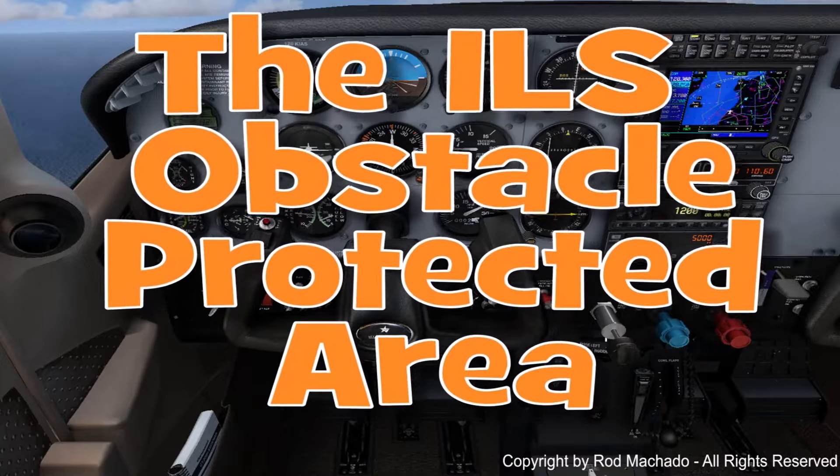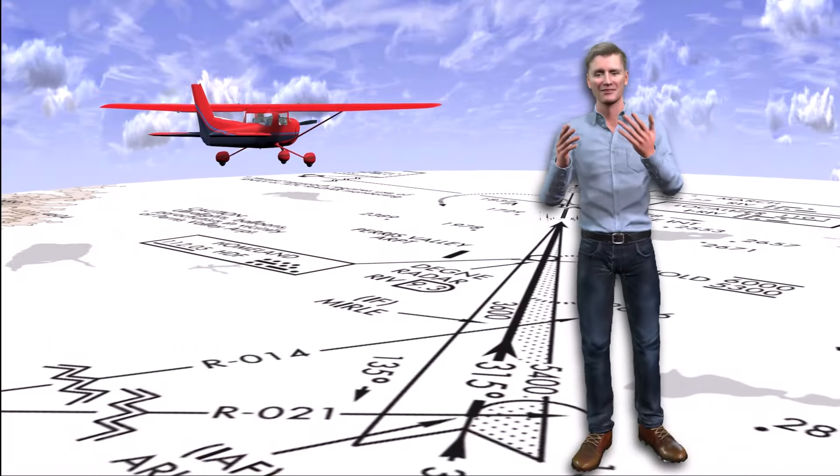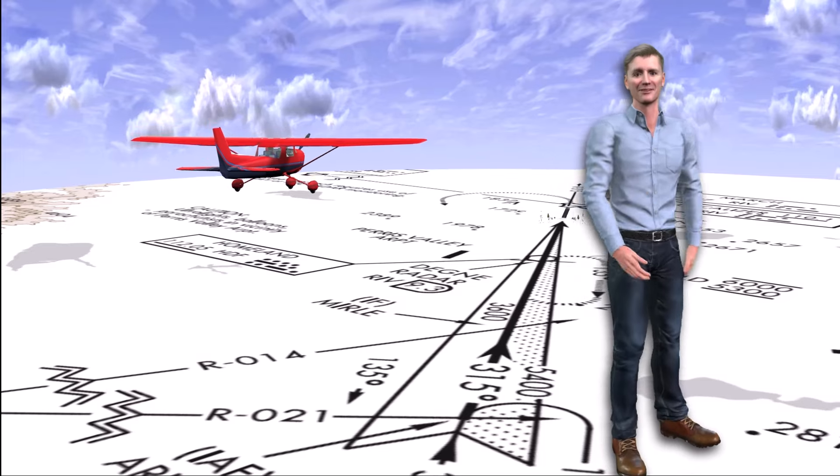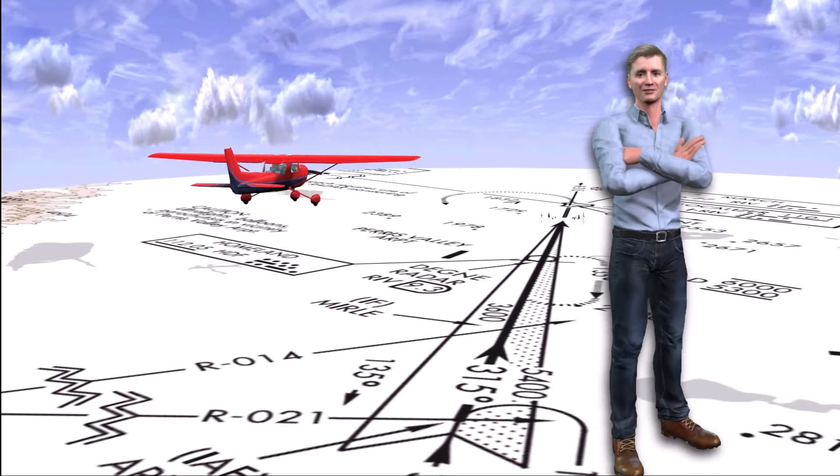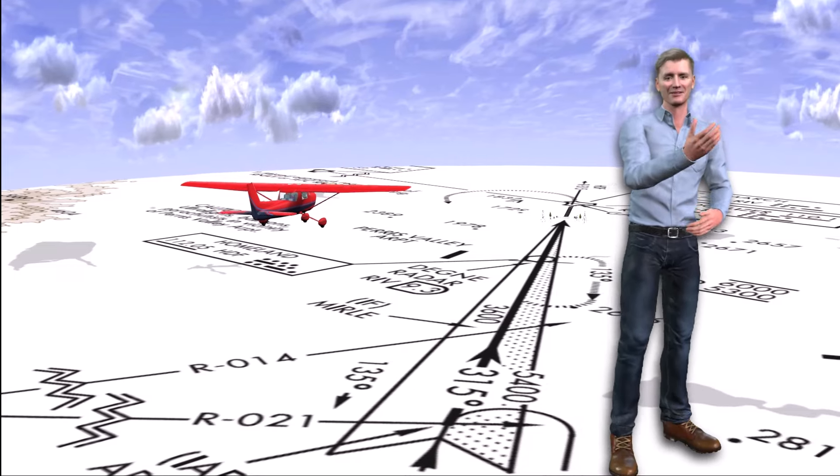ILS Obstacle Protected Airspace. While all instrument pilots are taught the need to maintain a centered glide slope needle, instructors don't seem to place the same emphasis on keeping the localizer needle centered during an ILS approach or any approach for that matter.